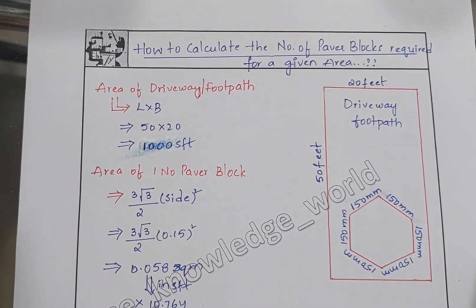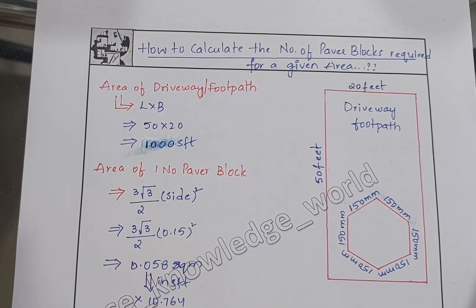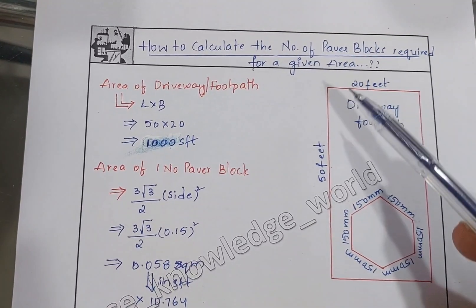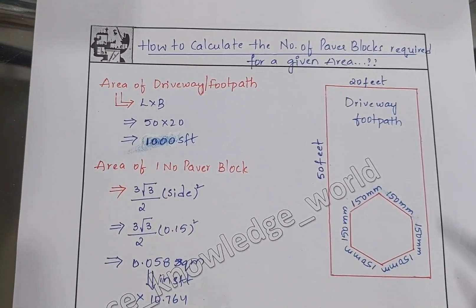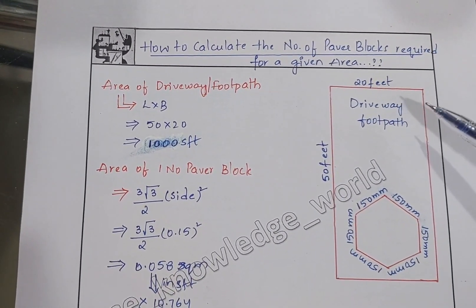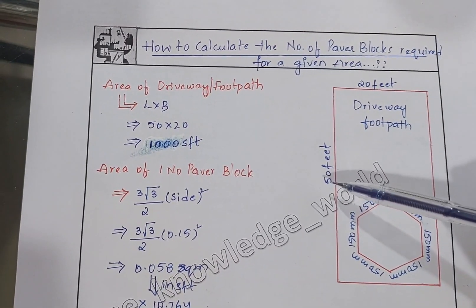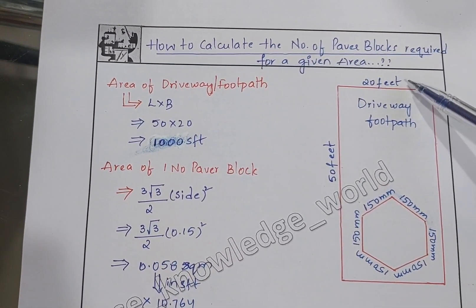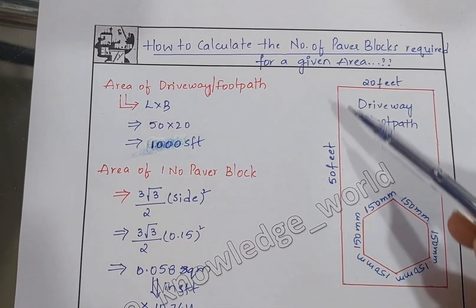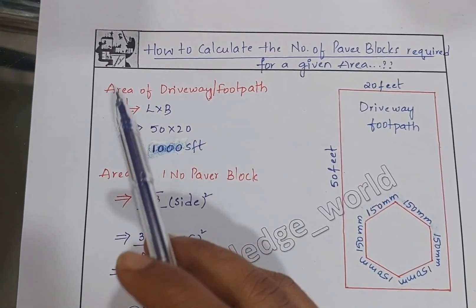Hello everyone. Today in this video we will learn how to calculate the number of hexagonal paper blocks required for a given area. Here you can see the area which we are calculating for — let us consider this is a driveway or footpath. The length we are taking is 50 feet and the width is 20 feet.